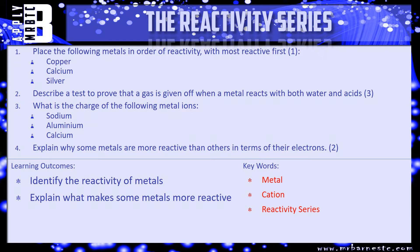Question three: what is the charge of the following metal ions? Sodium, group one — what does it form? Aluminium, group three, and calcium, group two. And then finally, explain why some metals are more reactive than others in terms of their electrons. Think back to what we've just been through in the video — why are some metals more reactive than others? Pause the video, have a go now, and we'll see how you've done in a minute.